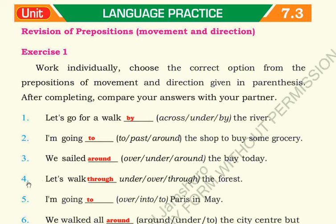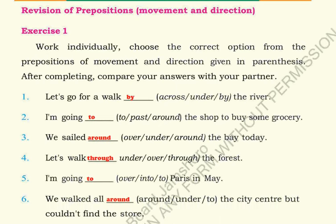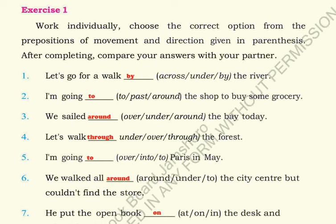Number four: Let's walk through the forest. Under ہے، over ہے، through ہے - let's walk through the forest، جنگل میں سے چلیں۔ Number five: I am going to Paris - اس میں سے تیسرا option۔ Number six: We walked all around the city center but couldn't find the store - ہم city center میں گمتے رہے لیکن ہم store نہیں تلاش کر پائے۔